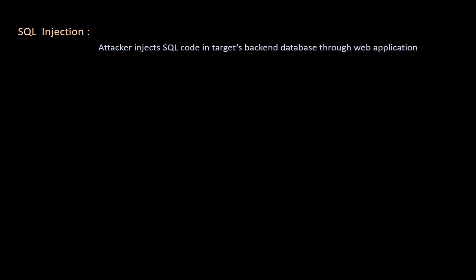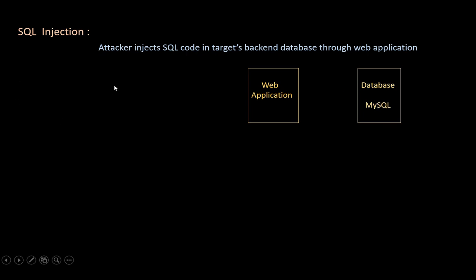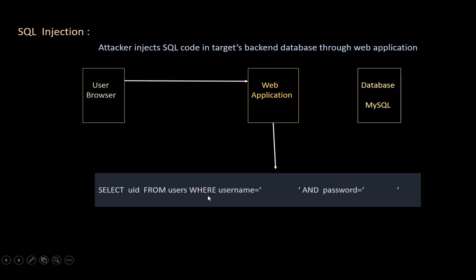SQL injection. In this attack type, the attacker injects an SQL query into the target's backend database through the web application. So we have a web application that interacts with a backend database like MySQL, and we have a user who uses the browser to interact with the web application. The web application uses a query to select a UID from users where the username and password match. If correct, the database returns the corresponding UID.